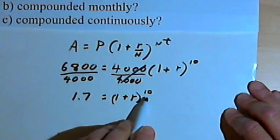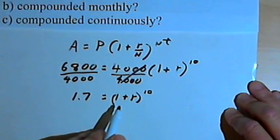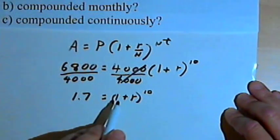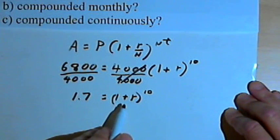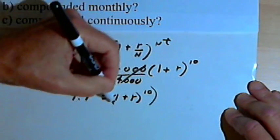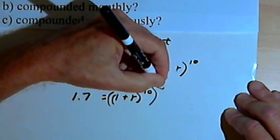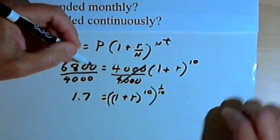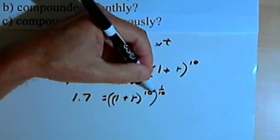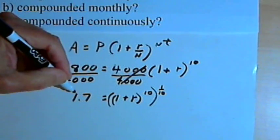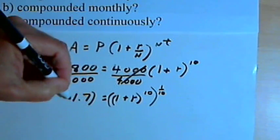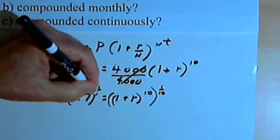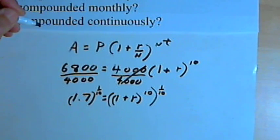So I'd like to get rid of this exponent, the 10. What I'll do is raise the entire right side of the equation to another power, 1 over 10, and then the 10 and the 1 over 10 will cancel each other out. I have to do the same thing to the left side of the equation, so I'm going to take 1.7 and also raise that to the 1 over 10.